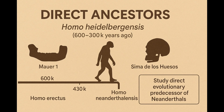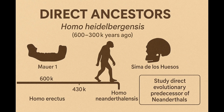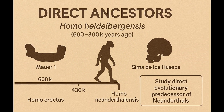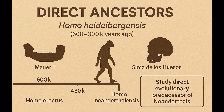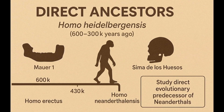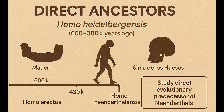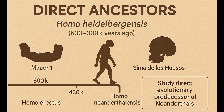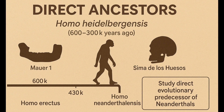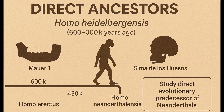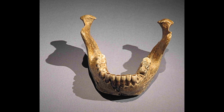The direct evolutionary predecessor of the Neanderthals is generally considered to be Homo heidelbergensis. This species or hominin lived approximately 600 to 300,000 years ago during the Middle Pleistocene and was found throughout Europe. Homo heidelbergensis is a robustly built, large-brained hominin that, in many respects, forms a transition between the earlier Homo erectus and the later Neanderthal man. Numerous European sites, for example the Maurer I mandible found in Germany approximately 600,000 years old, attest to its presence.